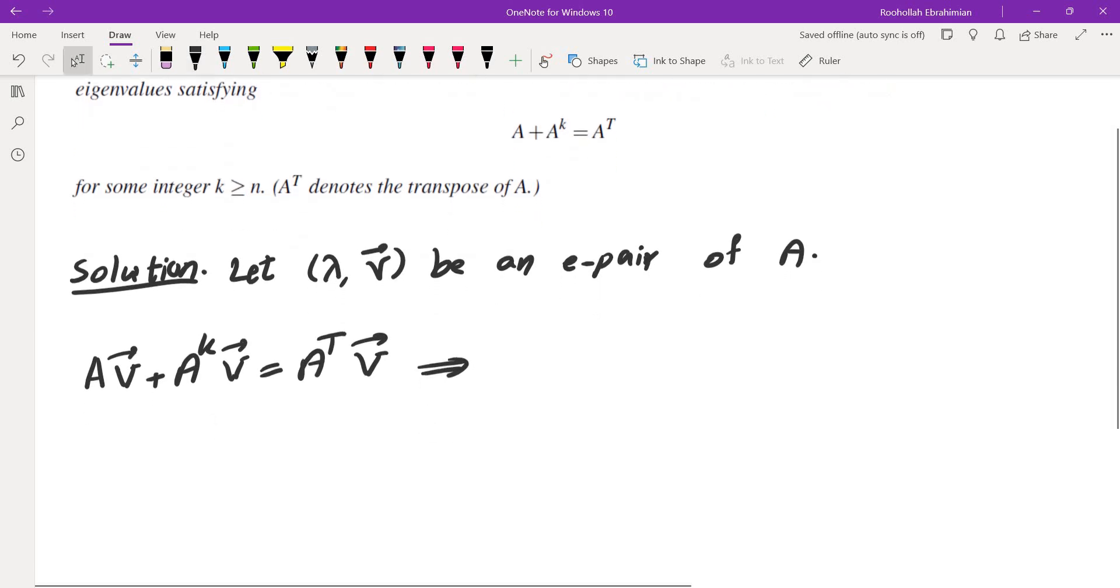Now, because lambda is an eigenvalue and V is an eigenvector, A V is lambda V and A squared V is lambda squared V, A to the power of K V is lambda to the power of K V. This is a well-known fact about eigenvector and eigenvalues. I will explain why that works at the end of the video.